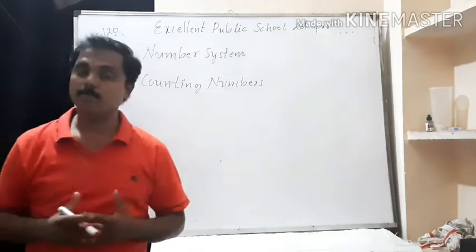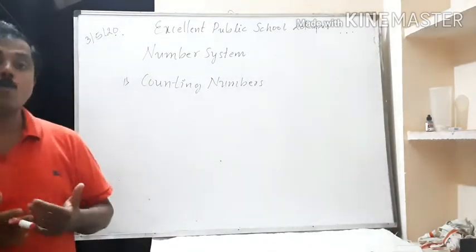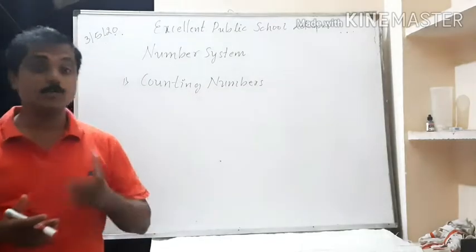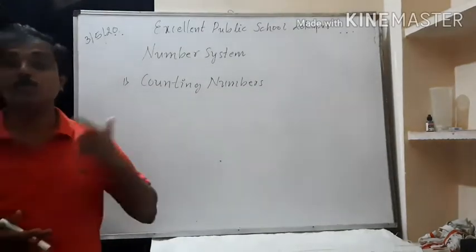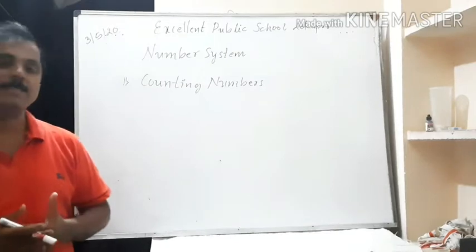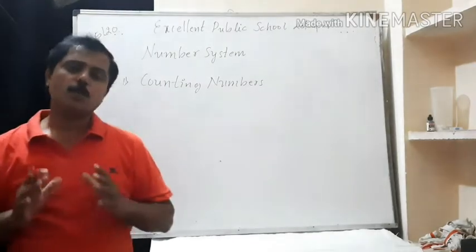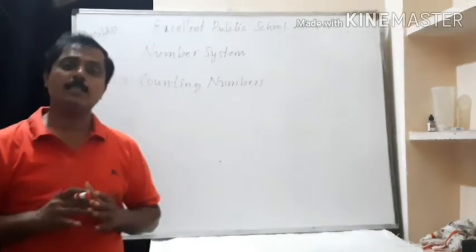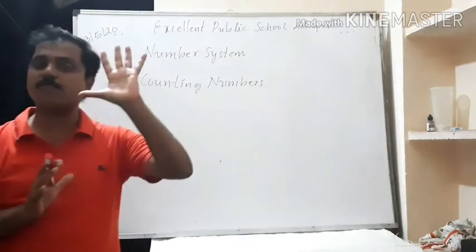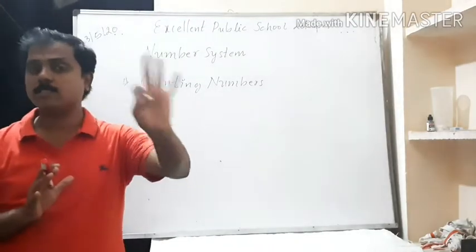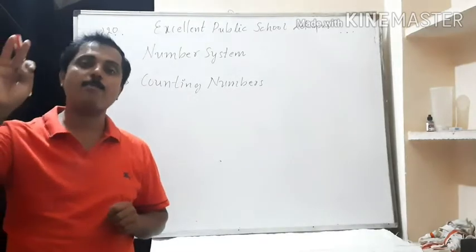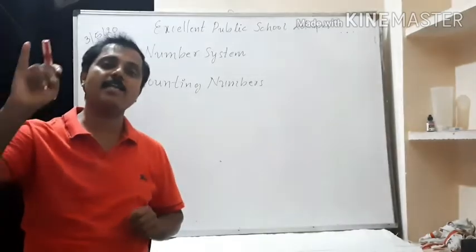For example, if I ask you to count the number of students present in the class, you start from one, two, three, four, five, up to infinity. If I ask you to count the number of fingers in your hands, you start from one, two, three, four, five, six, seven, eight, nine, ten.